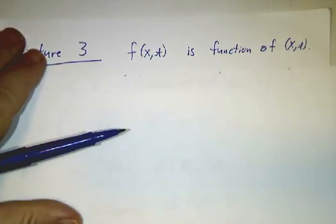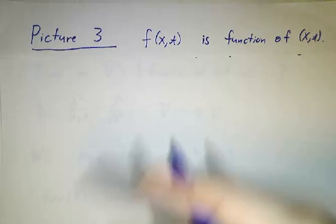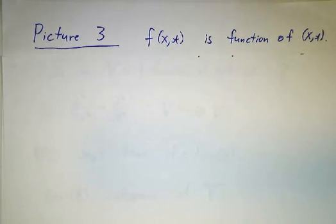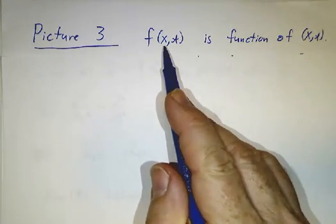The third picture is instead of saying f is a number that depends on x and t, or a function of x that depends on t, we just say it's a function of x and t. It just sits there. It doesn't vary, it is.